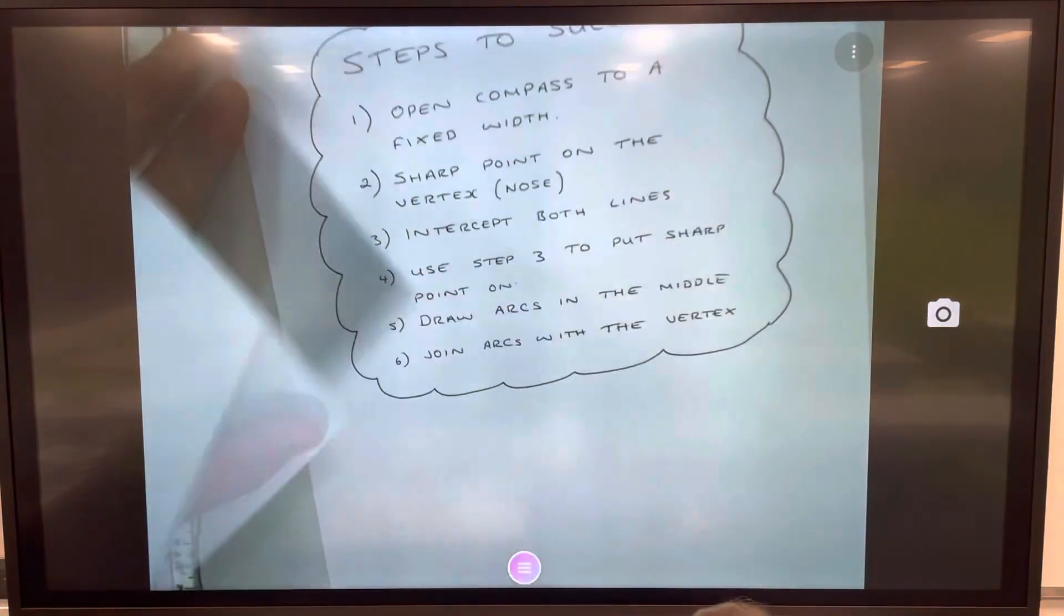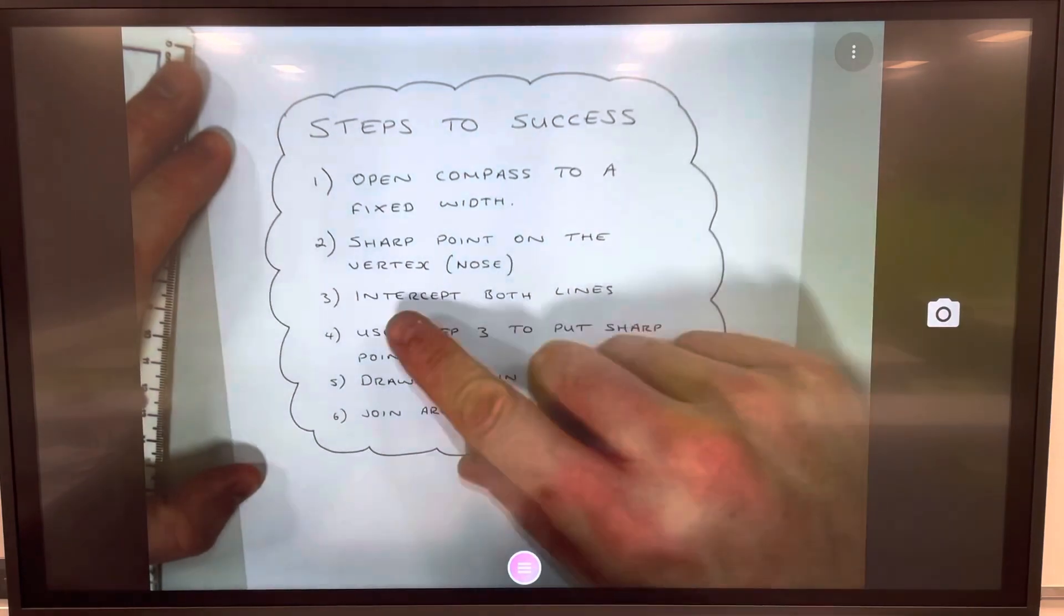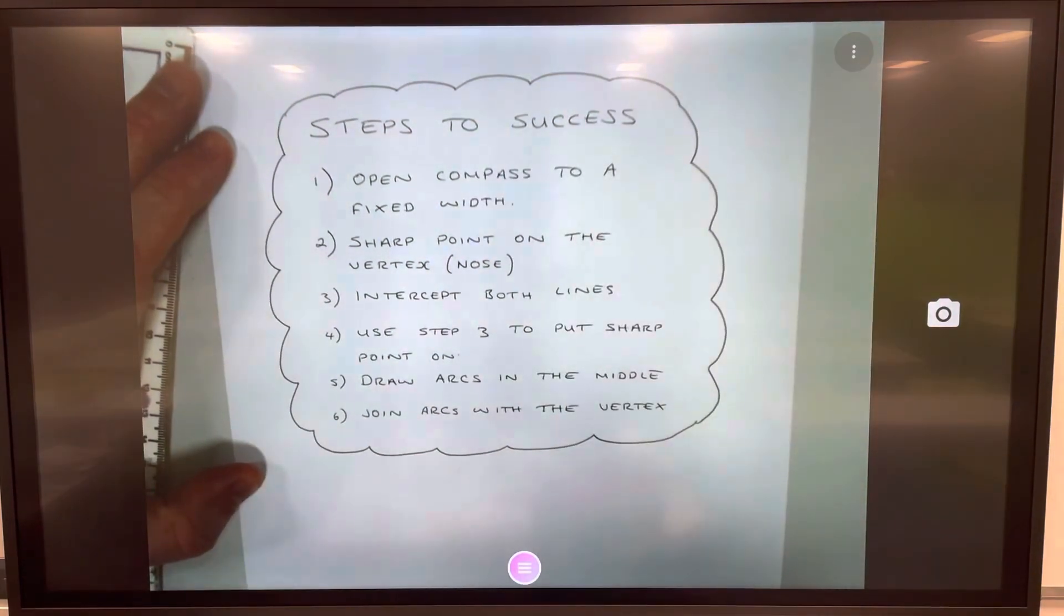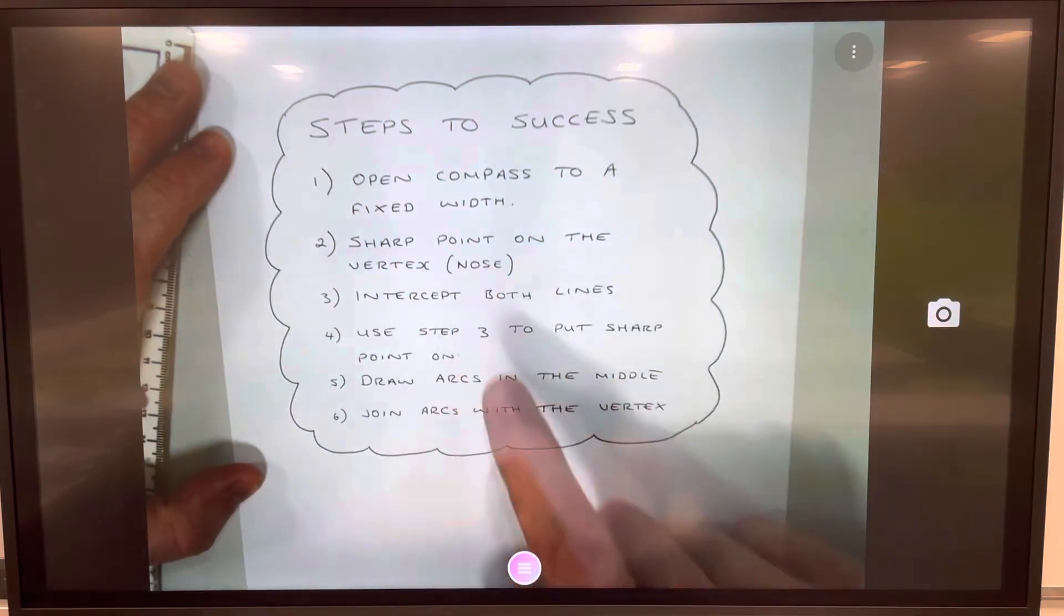So some steps there: open compass to a fixed width - yes, I should have theoretically said a pair of compasses, but you know what I mean. When I use the compass, the sharp point goes on the vertex. I've put here 'nose,' so on that mouse's nose.